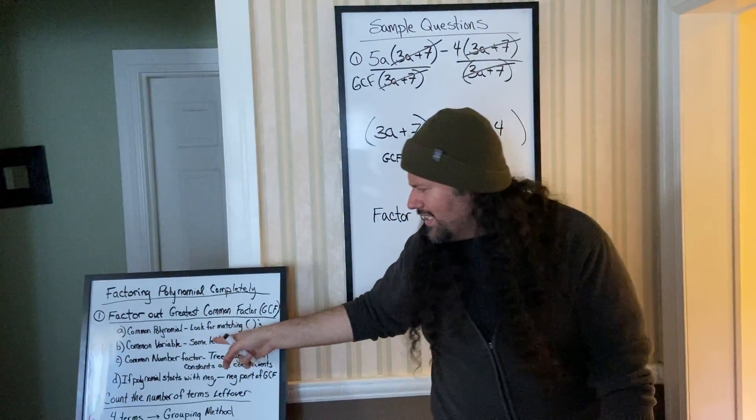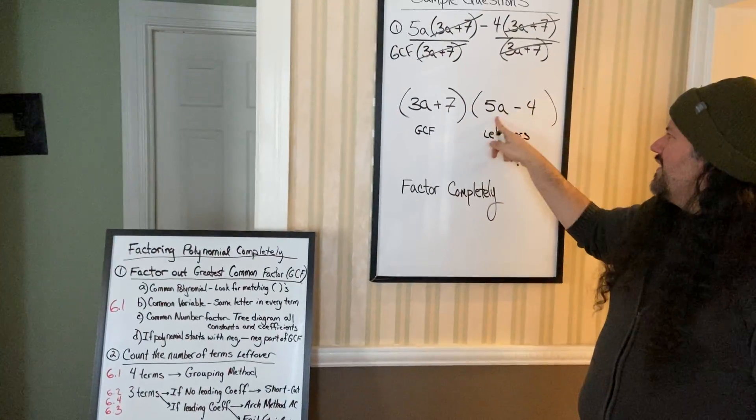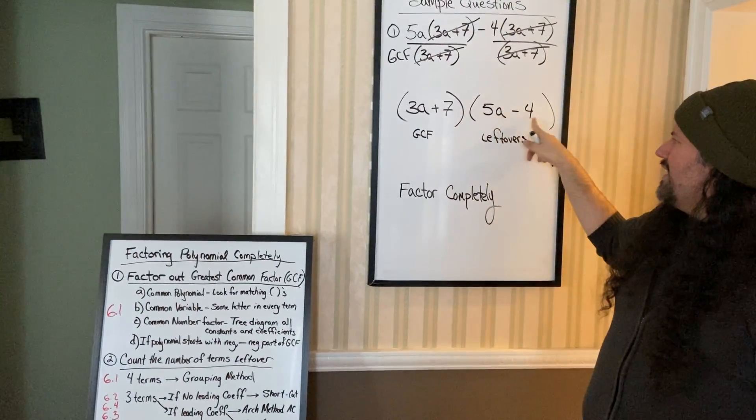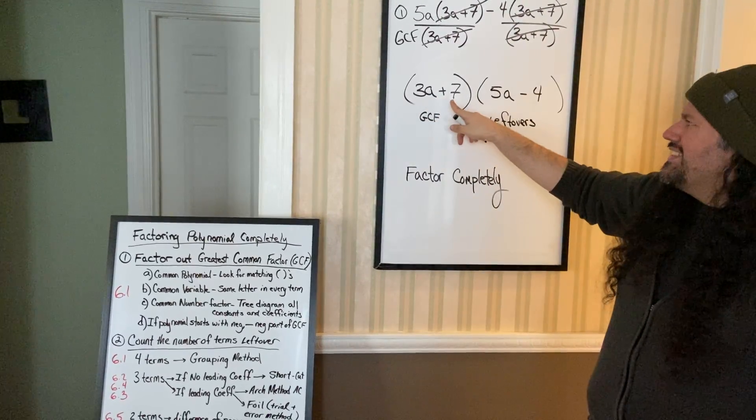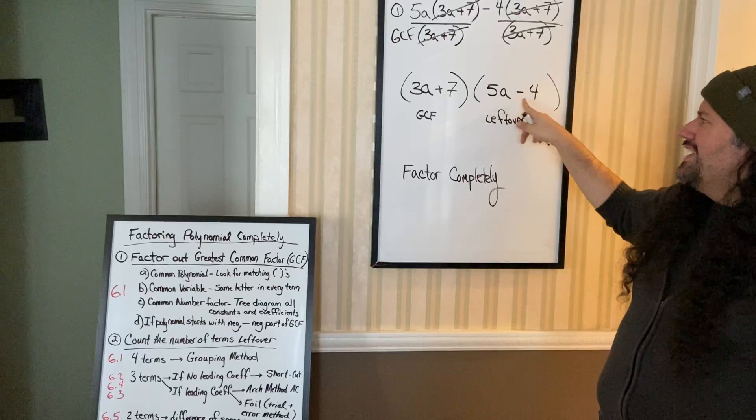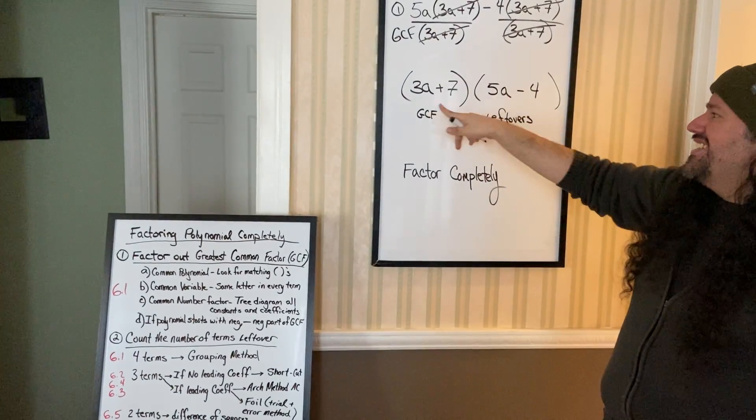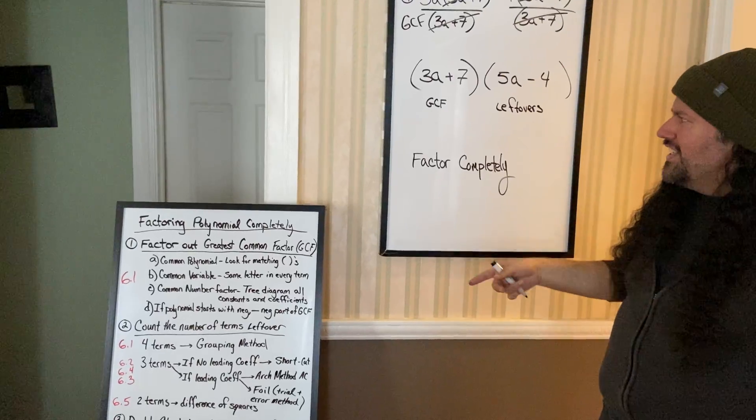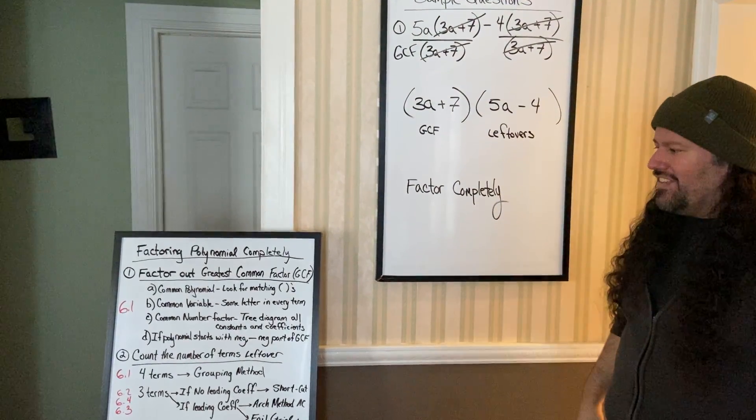Once you take out your GCF, double check to make sure you don't have anything else to do. Did we have a common letter in all terms? No. A common number factor? 3, 7, 5, 4 - these are all prime numbers. They don't have the same number factor. And our polynomial never started with a negative sign.